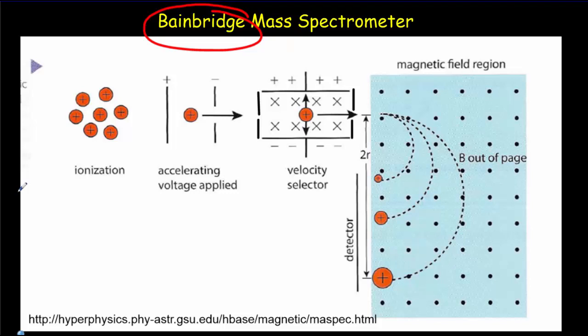So there's four regions to the Bainbridge mass spectrometer. In the first region here, that's where you have an elemental gas. And they go through a process where they get ionized and collimated. Collimated means put into a beam. They then enter the second region here where you've got accelerating plates.